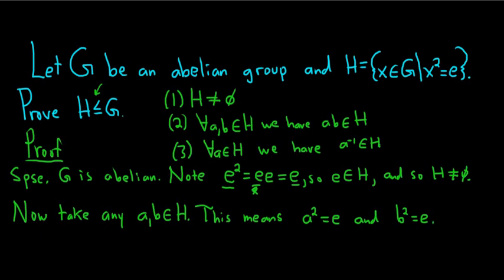Now we have to show that the product ab is in H. For the product to be in H, the quantity (ab) squared must equal e. So the natural thing to do is to look at that quantity. Note: (ab) squared. We can write this as ab times ab. Everything here is associative, so we can use associativity on all four elements.